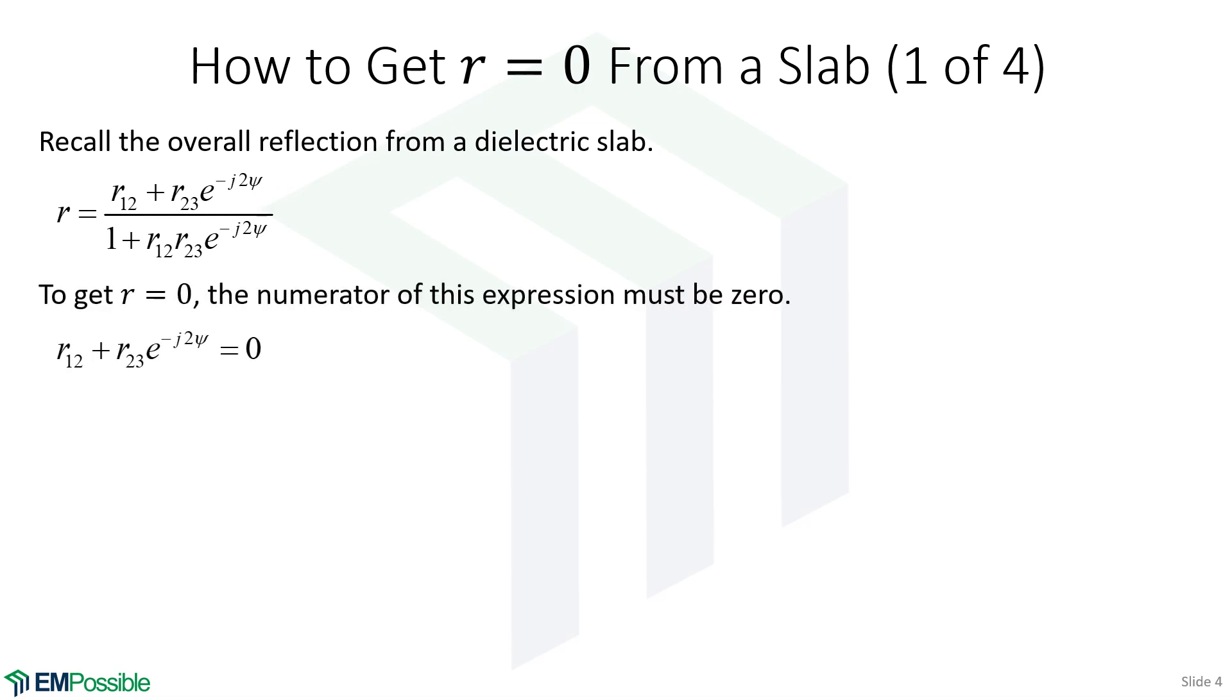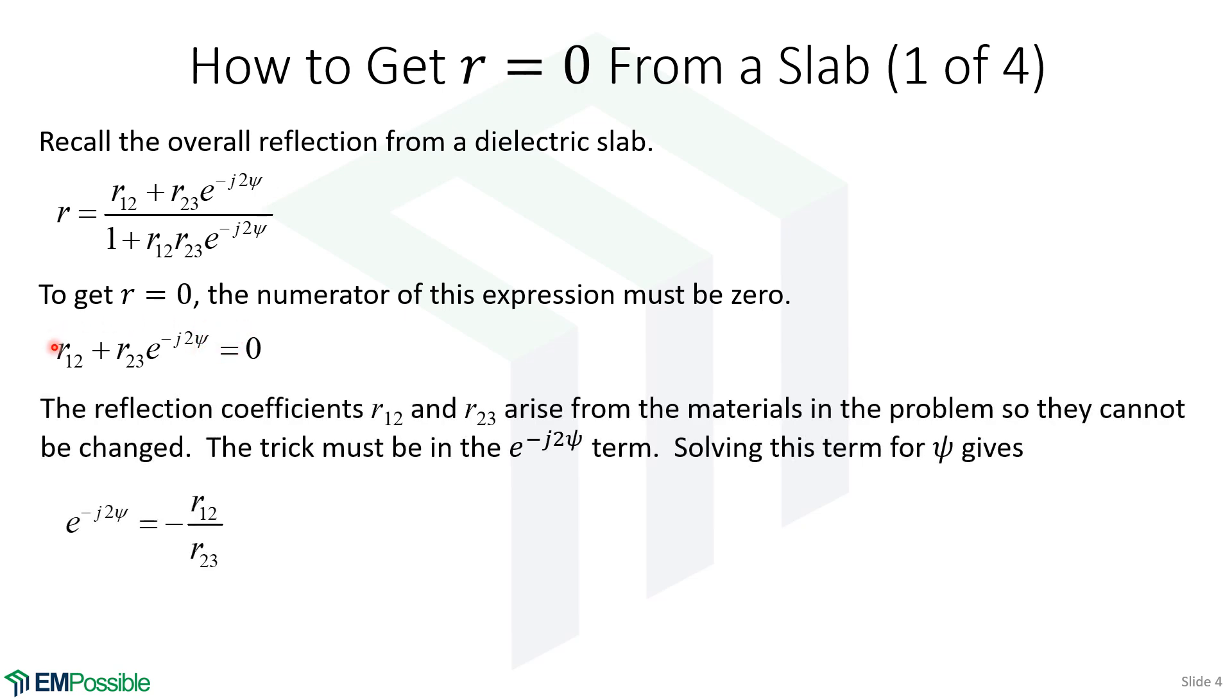So our problem reduces to this. Well, let's think about this now. We really don't have a choice on these two reflection coefficients other than the choice in materials. But chances are we can't get either of these to be zero. So we don't really have a choice there. So the trick must be this psi term in order to get all of this to go to zero. So let's solve this equation for the psi term. So the first step is just solve it for this complex exponential. So the complex exponential is minus r12 over r23.